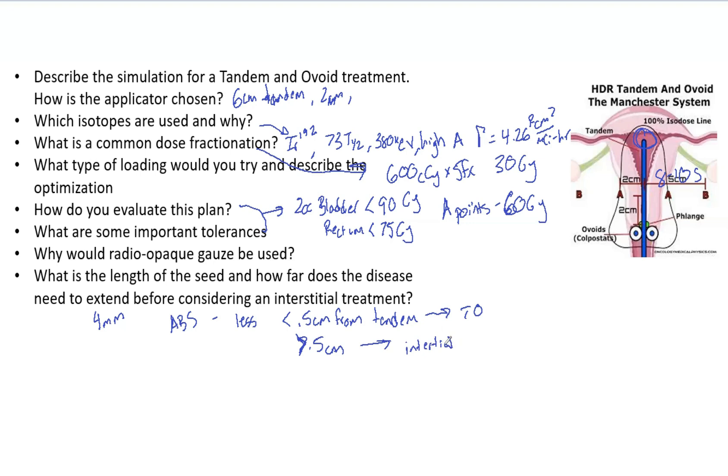Just to cover something that maybe I'm missing in this question - Point A is essentially the prescription point. Point A is 2 cm up, 2 cm over from the tandem. That's a location where the uterine vessels cross the ureter - that's the significance of those.